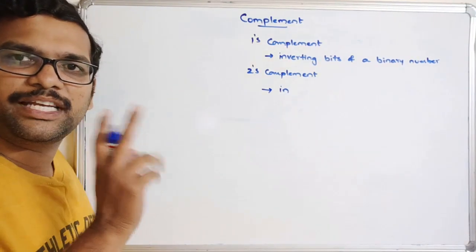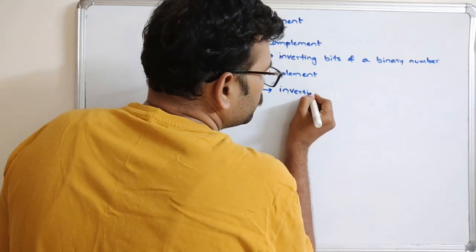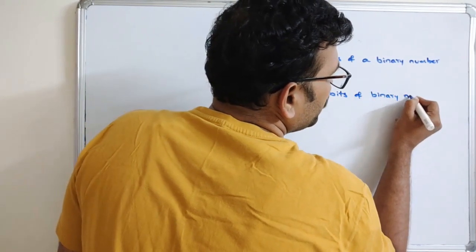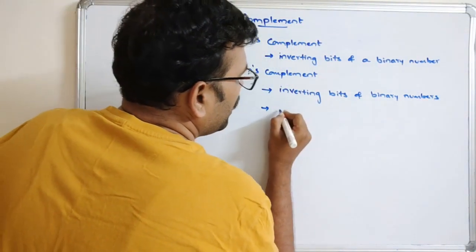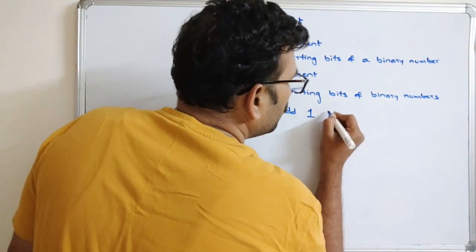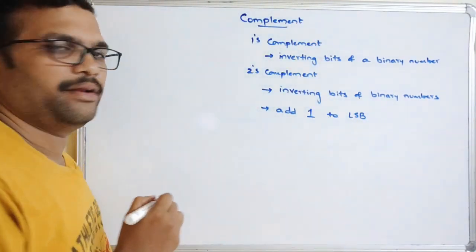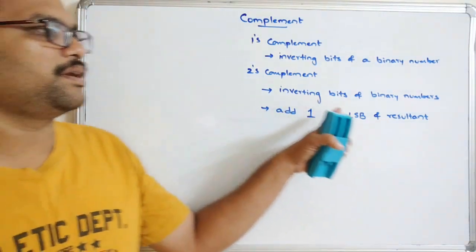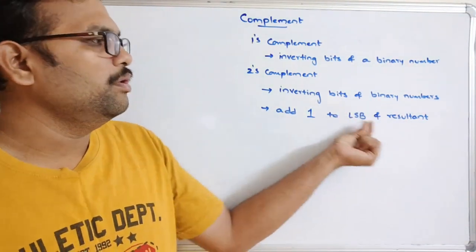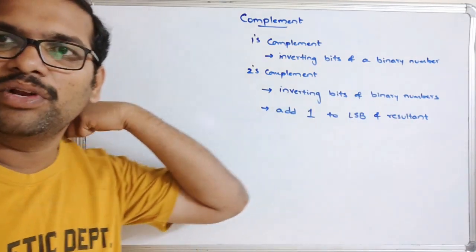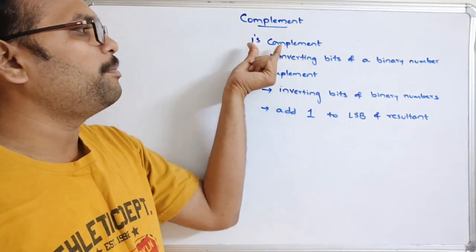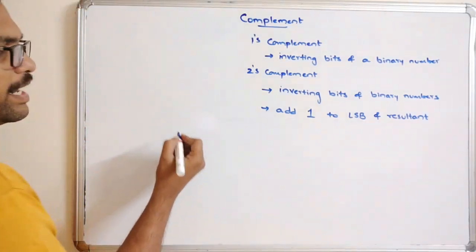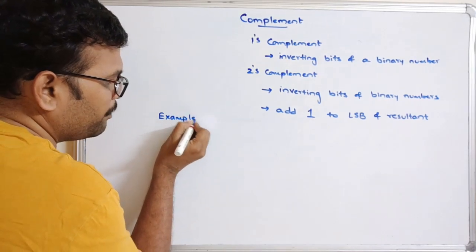In order to find the 2's complement, two steps should be done. The first step is inversion of the bits of the binary number. The second step is to add 1 to the LSB — the least significant bit — of the result. So inversion gives the 1's complement, and inversion plus adding 1 to the LSB gives the 2's complement.